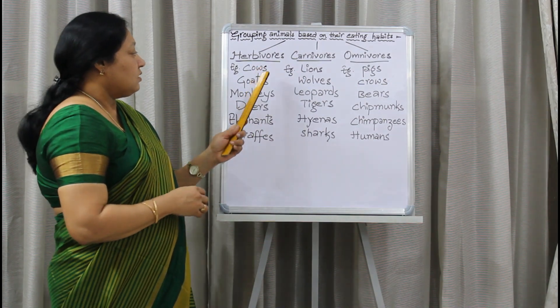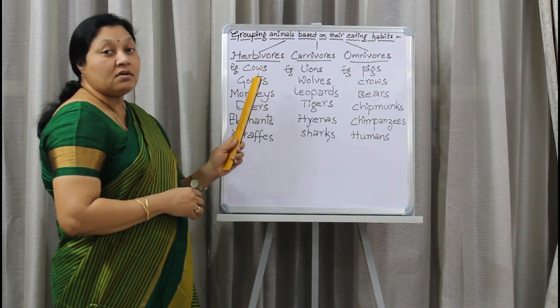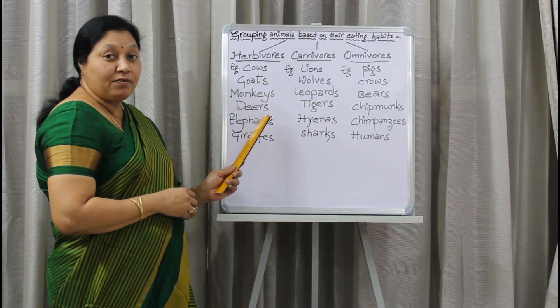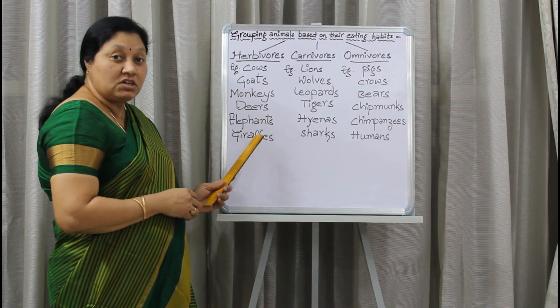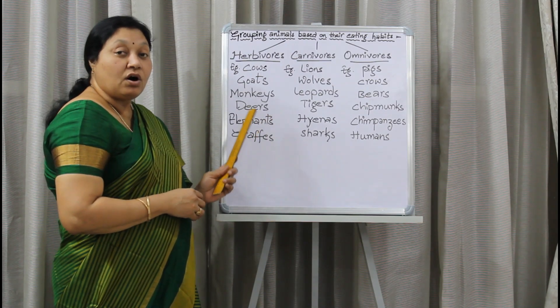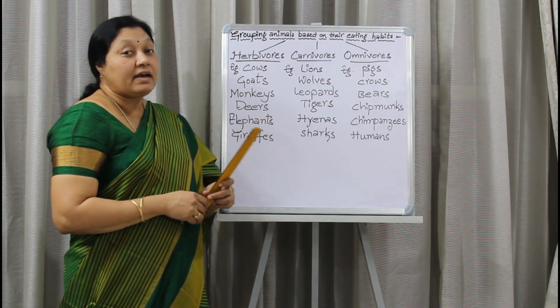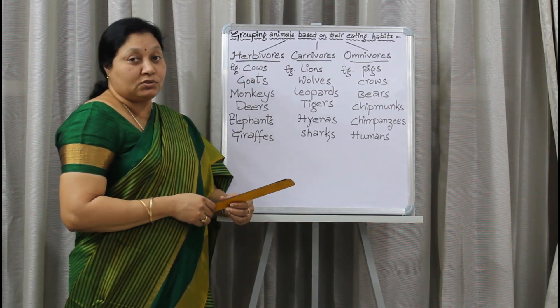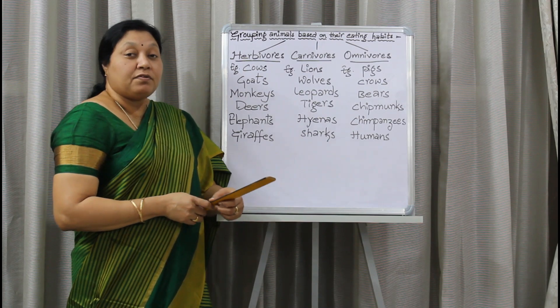Cows, goats, monkeys, deer, elephants, giraffes — all these are examples of herbivores.